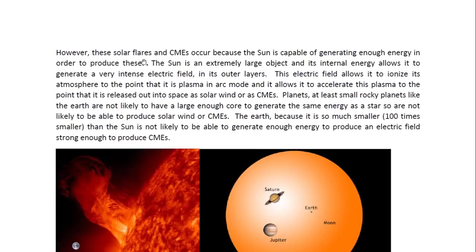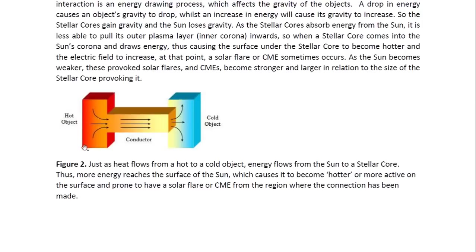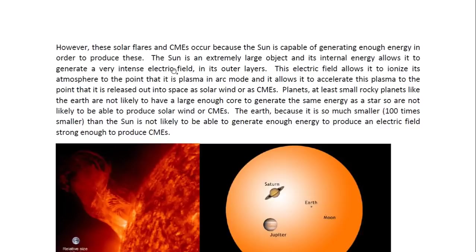These solar flares and CMEs occur because the sun is capable of generating enough energy to produce these. The sun is still generating the energy that is producing them even though the stellar core is provoking it. The sun is an extremely large object and its internal energy allows it to generate a very intense electric field in its outer layers. This electric field allows it to ionize its atmosphere to the point that it is plasma in arc mode, and it allows it to accelerate this plasma to the point that it is released out into space as solar wind or CMEs.